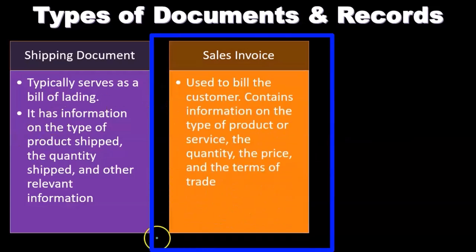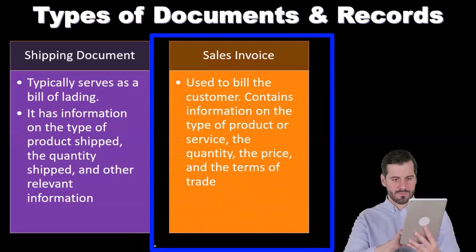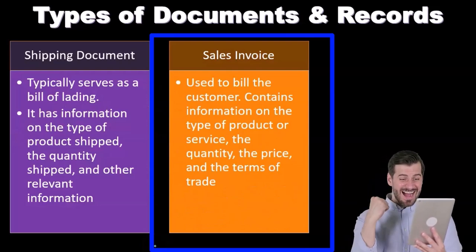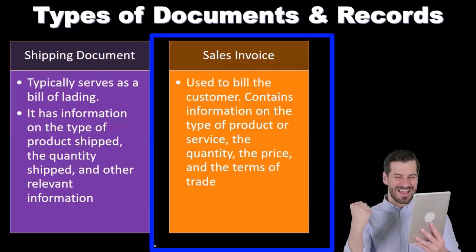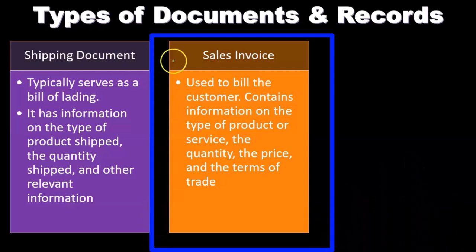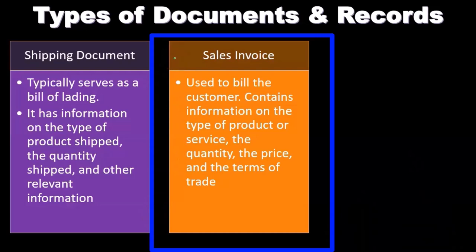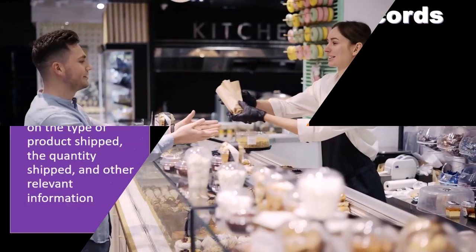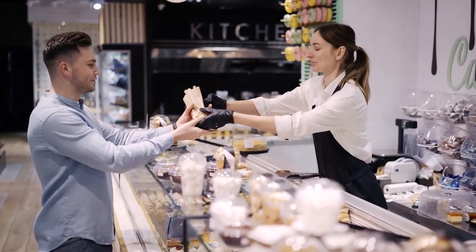Then we have the sales invoice, used to bill the customer. It contains information on the type of product or service, the quantity, the price, and the terms of the trade. So the sales invoice is our invoice — we usually call it an invoice from our side to the customer; it's going to be the bill we're sending out.